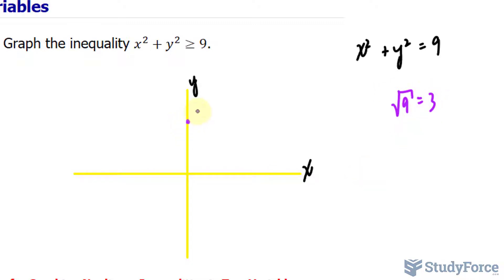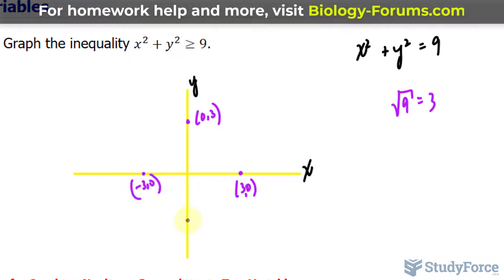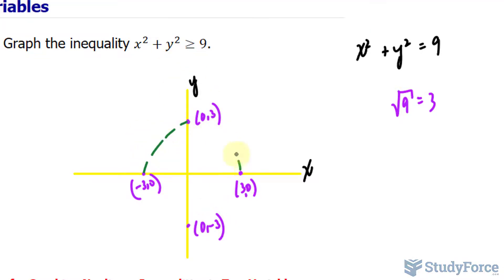We'll have a point here, which is at 0 and 3, 3 and 0, negative 3 and 0, and of course, 0 and negative 3. Connecting these points with a curved line gives us, as mentioned, a circle.